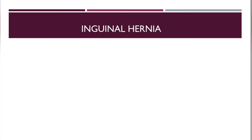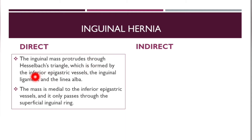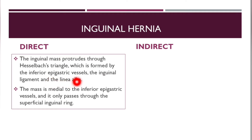Let's look at differences between direct and indirect inguinal hernia. In direct inguinal hernia, the inguinal mass protrudes through Hesselbach's triangle, which is formed by the inferior epigastric vessels laterally, the inguinal ligament below, and — anatomically correct — the lateral border of the rectus abdominis.